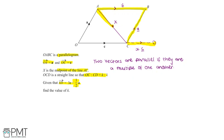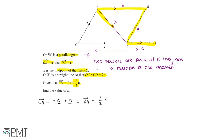To find the vector X to A, we first find the vector C to A. To get from C to A, we go from C to O and then O to A. The vector O to C is c, so the vector C to O is minus c. Then O to A is a. So C to A equals minus c plus a. Since X is the midpoint of AC, the vector XA is half of the vector CA, giving XA equals minus half c plus half a.